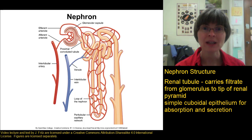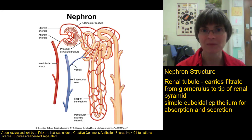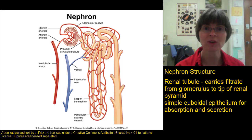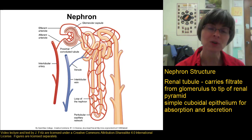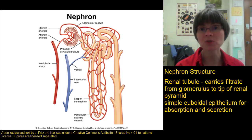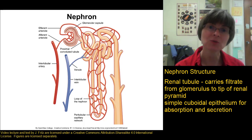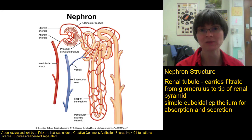The renal tubule is made of simple cuboidal epithelium, which is well-suited for absorption and secretion. This is important because all along the renal tubule, we're reabsorbing all the good molecules and water that were pushed into the filtrate, and we also need to do a little bit of secretion, adding in some additional waste molecules into the filtrate.